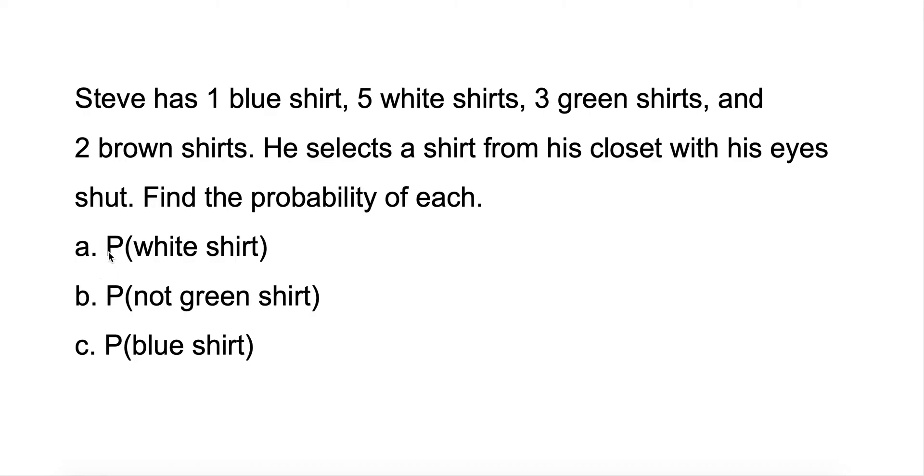What we want to do on the first one is find the probability of Steve finding a white shirt. Steve has five white shirts. To find out all of his possibilities, we add them up. One plus five plus three plus two gives us 11. So our probability of Steve getting a white shirt is five out of 11.